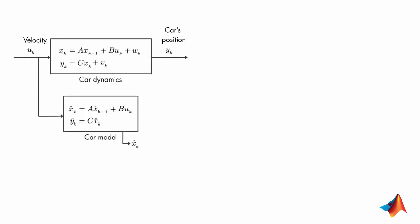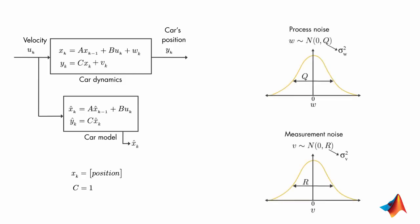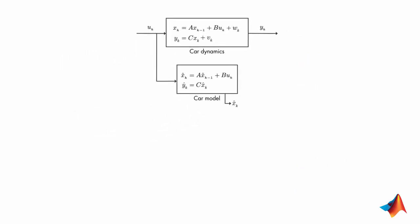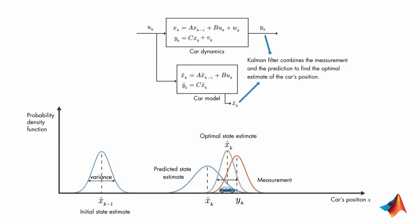In that example, we also showed the car dynamics and the car model for our single-state system, and we discussed process and measurement noises along with their covariances. Finally, we said that you could win the competition by using a Kalman filter, which computes an optimal, unbiased estimate of the car's position with minimum variance.